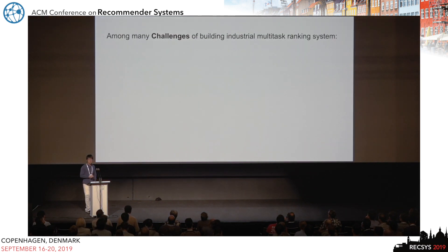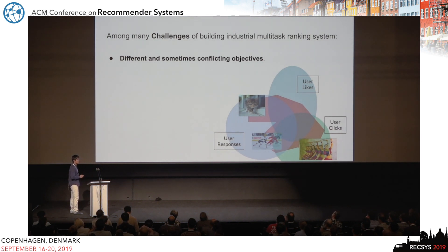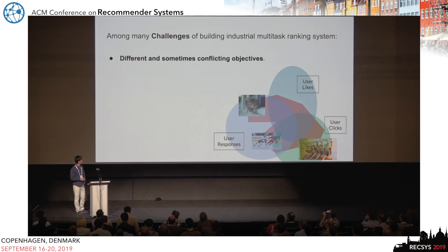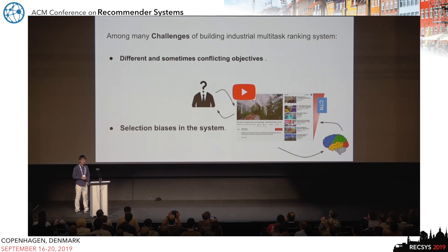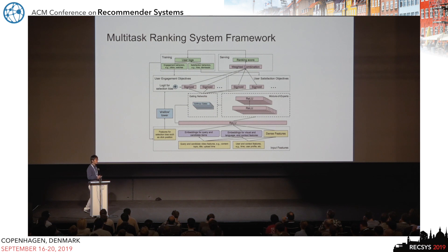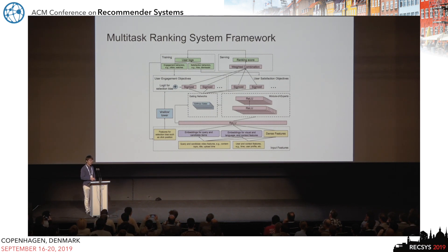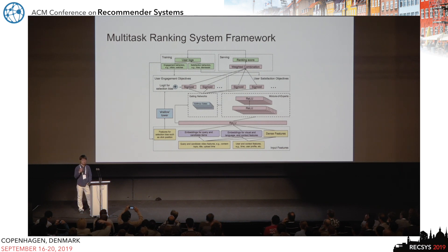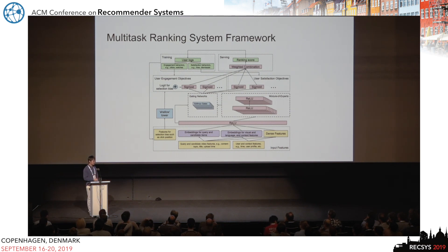Among the many challenges of building large-scale multi-task ranking systems, we focus on two: first, there are often different and sometimes conflicting objectives — what a user likes might be totally different from their survey responses. Second, since we use user implicit feedbacks generated from a production system, there are natural selection biases in our training data. To tackle these, we propose a multi-task ranking framework that takes a combination of query and candidate features — sparse embeddings and dense features — and outputs several prediction targets corresponding to user engagement or satisfaction behaviors, then learns a combination function to produce a final ranking score.